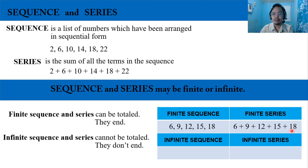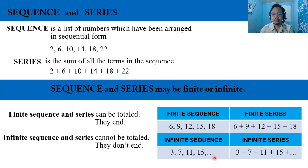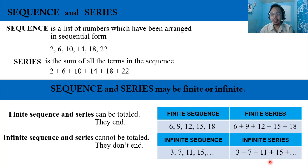For the infinite sequence, we have 3, 7, 11, 15, and so on. This ellipsis symbol indicates its infinity. Its infinite series form is 3 plus 7 plus 11 plus 15, going to the nth term or the infinite term — this ellipsis indicates its infinity.